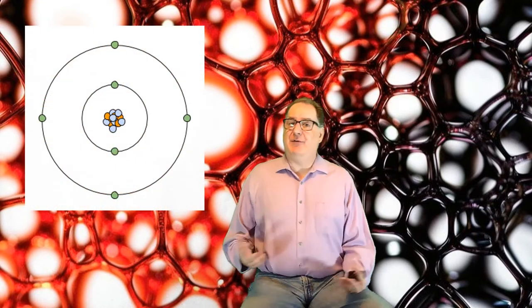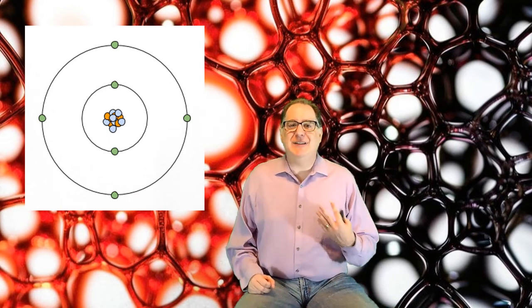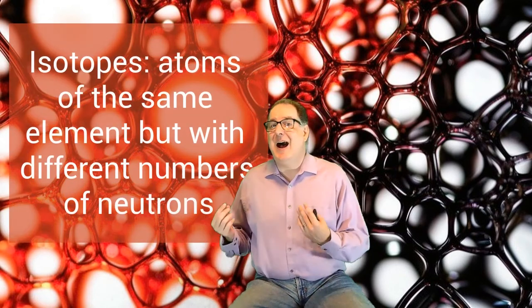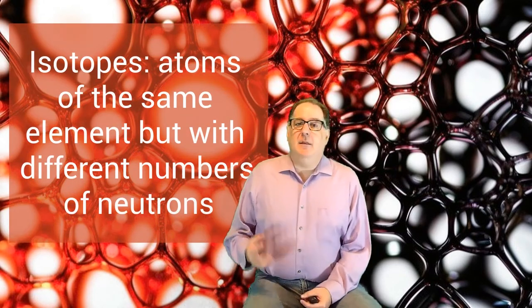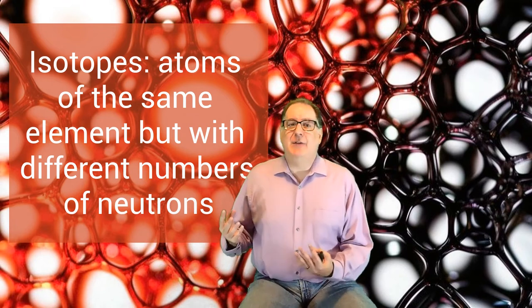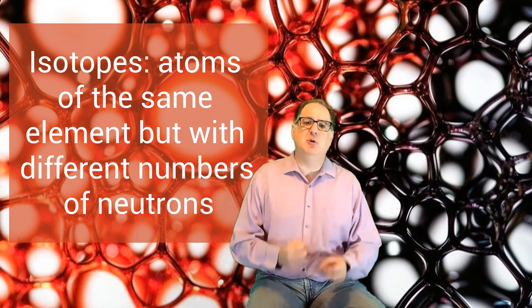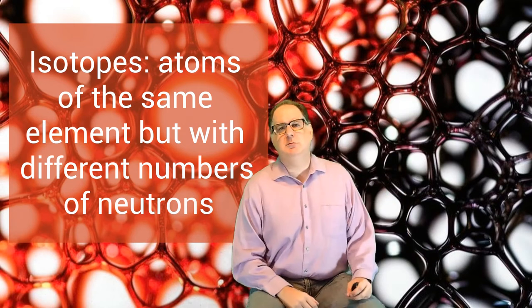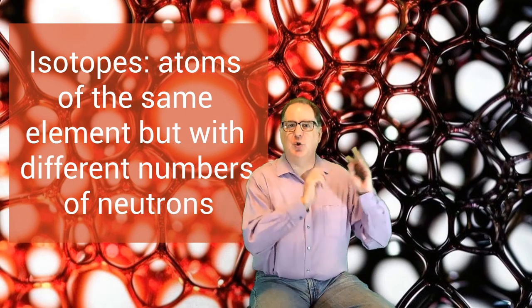Most carbon atoms have six neutrons, but some have more and some have fewer. The carbon atoms with masses different than 12 are called different isotopes of carbon. There are carbon atoms with a mass of 10 AMU, carbon atoms with mass of 12 AMU, carbon atoms with mass of 13 AMU. They're all carbon atoms, just different isotopes of carbon.